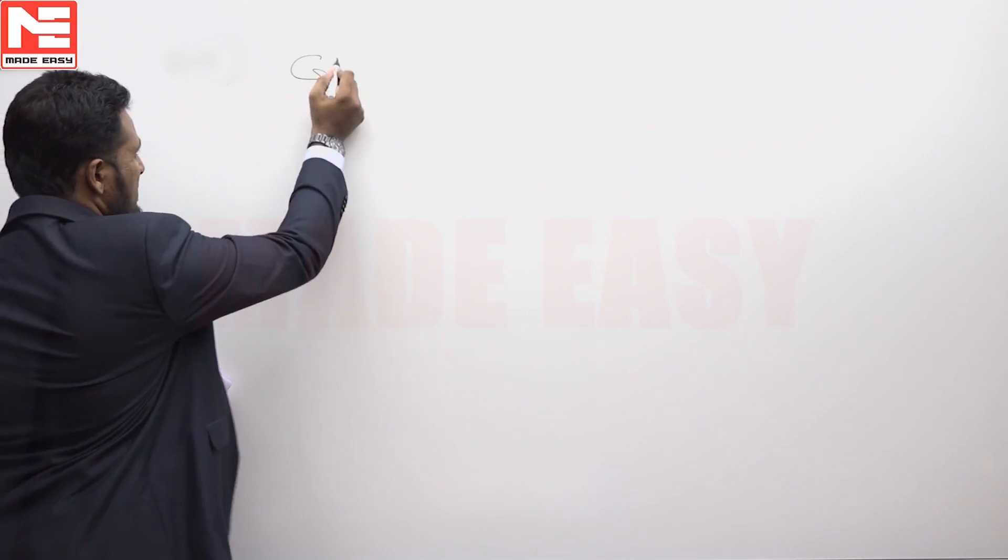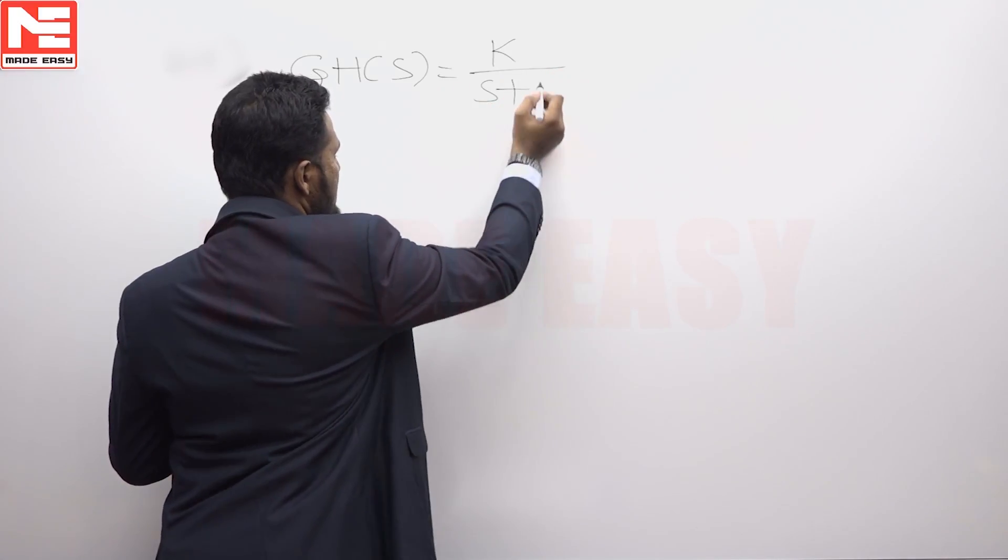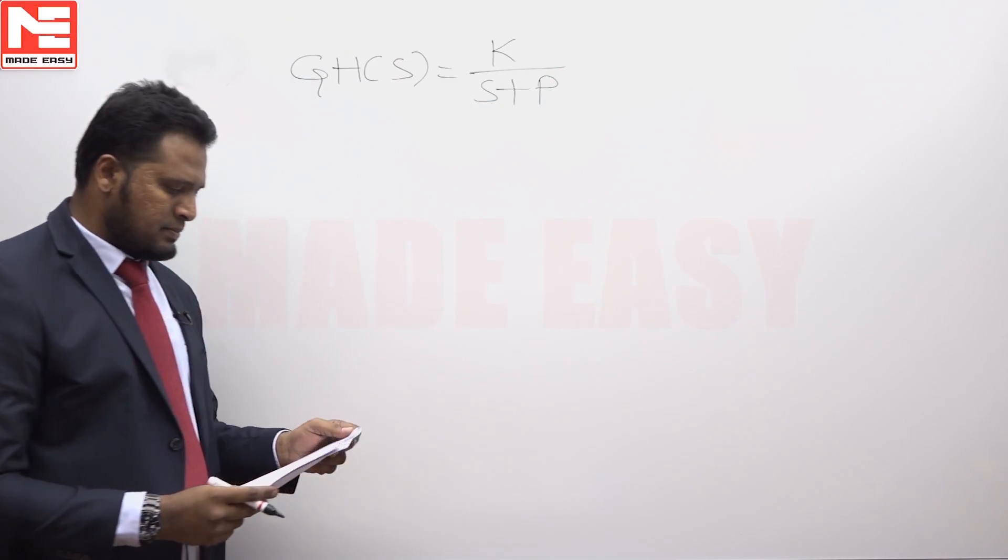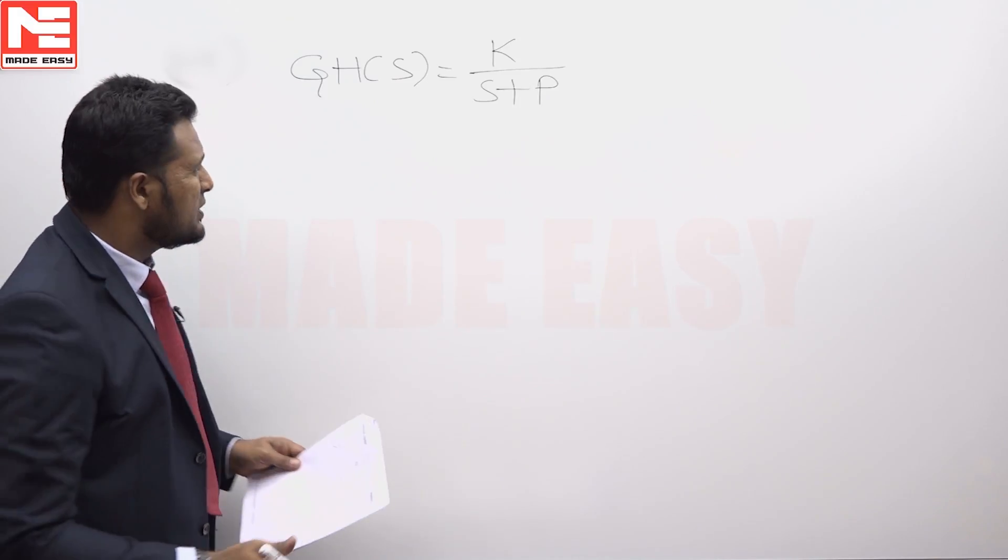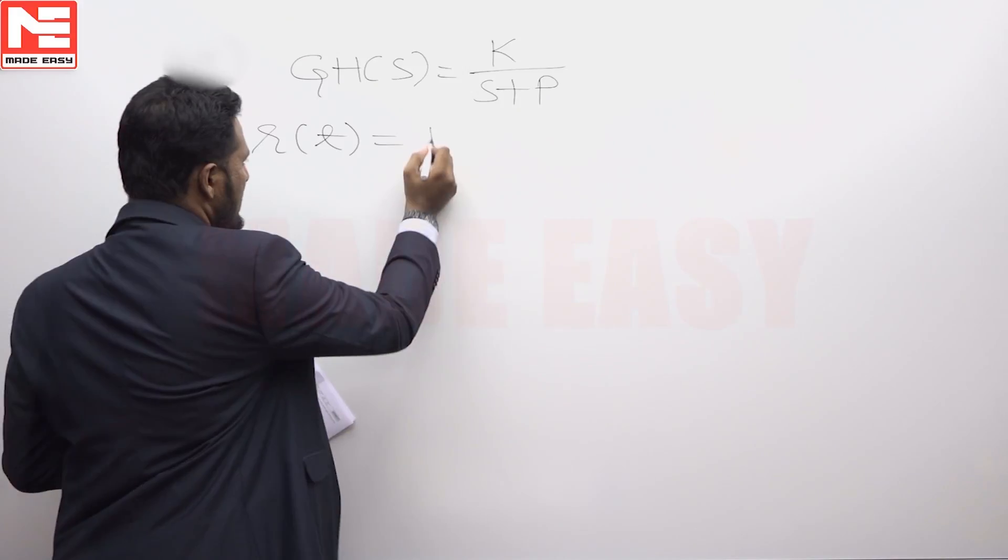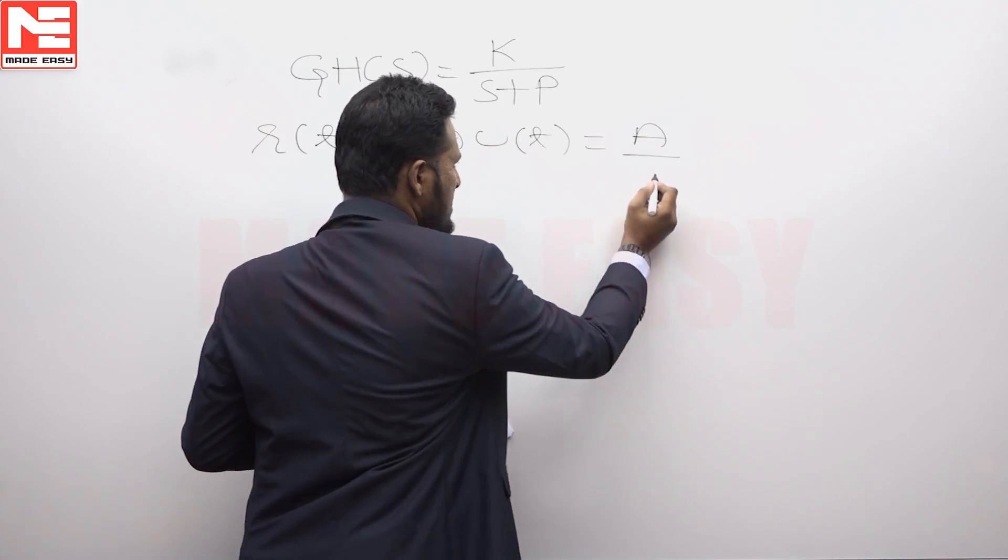Open-loop transfer function of a system is given K upon S plus P. Question is to find the steady state error of the system for the input whose Laplace transform is A upon S.